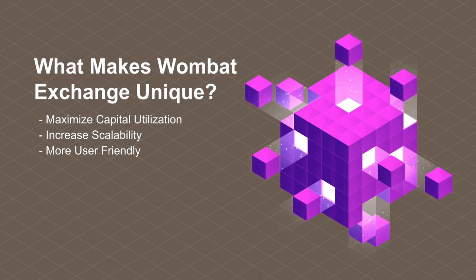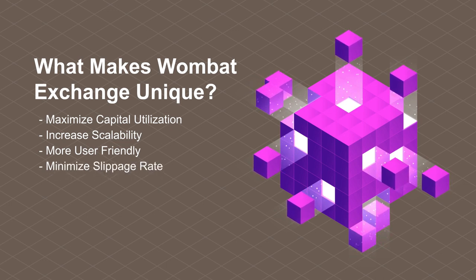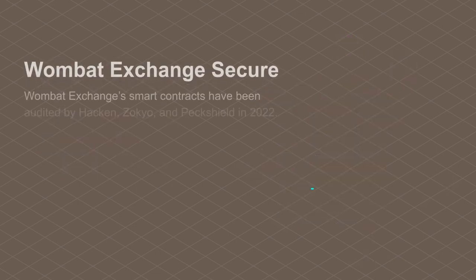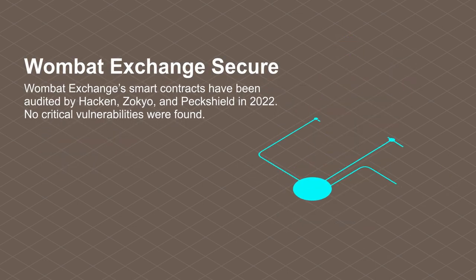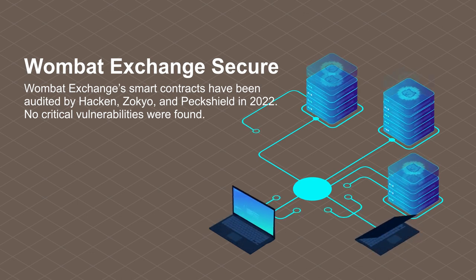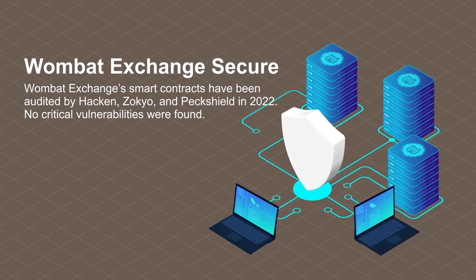And fourth, minimize slippage rate. Wombat uses an asset-to-liability model and negates slippage until higher transaction amounts and reduces slippage when it occurs. Do not worry about security on Wombat Exchange — its smart contracts have been audited by Hacken, Zocchio, and PeckShield in 2022. No critical vulnerabilities were found.